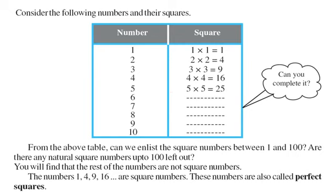Then we can complete this table. See, 9 into 9 is what? It is 81. So you can easily observe that we can list these square numbers between 1 and 100.